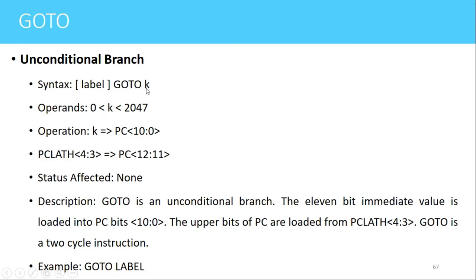Here K is the address of program memory, and the maximum address we can have is 2047, so using this GOTO instruction we can jump anywhere in the two kilobytes of memory space. The operation performed is that the address present in the instruction as the operand is copied to the program counter. There is an 11-bit address related to two kilobytes of memory space that will be copied to the program counter, and the remaining two bits will be taken from the PC LAT register.